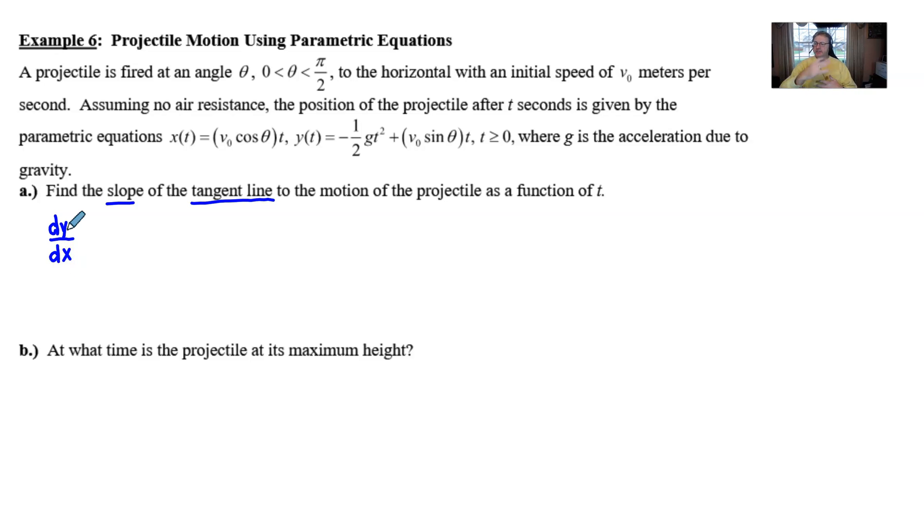The slope of our tangent line always is and always will be dy over dx. It's the change in y over the change in x. But because we have this written as parametric equations with the variable t, note t is really our variable.